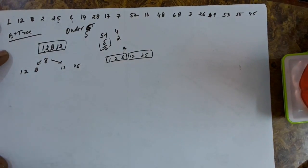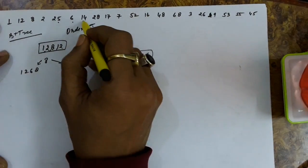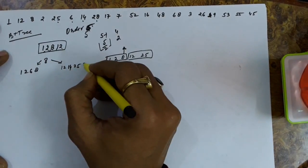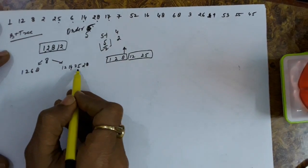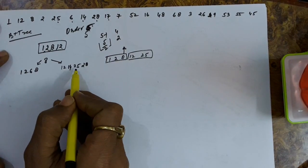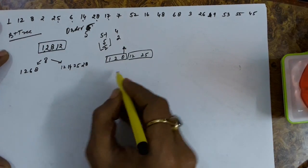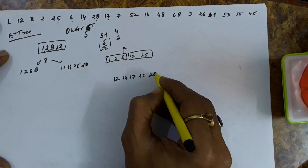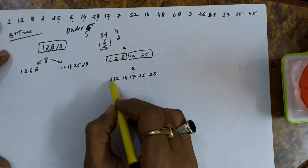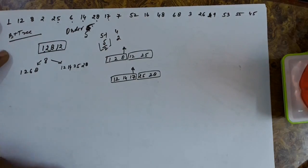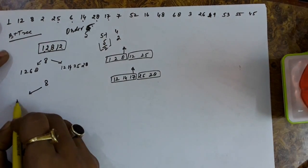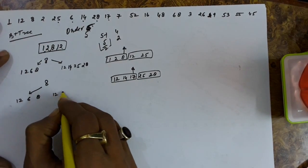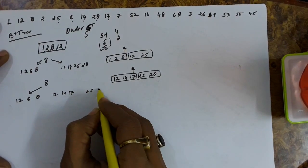The next key for insertion is 6, which will be inserted on the left. Next key is 14, inserted on the right. Next key is 28, inserted there as well. When we insert 17 into that node, it is containing the maximum keys, so we split: 12, 14, 17, 25, and 28. The key 17 is sent upwards while retaining it on the leaf node, creating two new nodes: 12, 14, 17 and 25, 28.